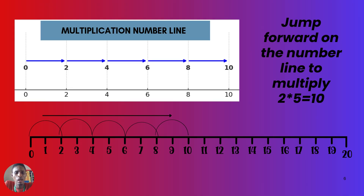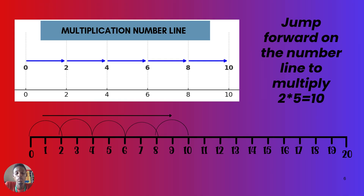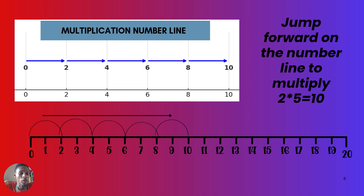For multiplication on a number line, instead of counting on the back of your notebook, you can use the number line easily. To multiply two times five: the number line ranges from zero to twenty. You jump forward from zero, counting in steps according to the question. The question says two times five, so you jump in steps of two.